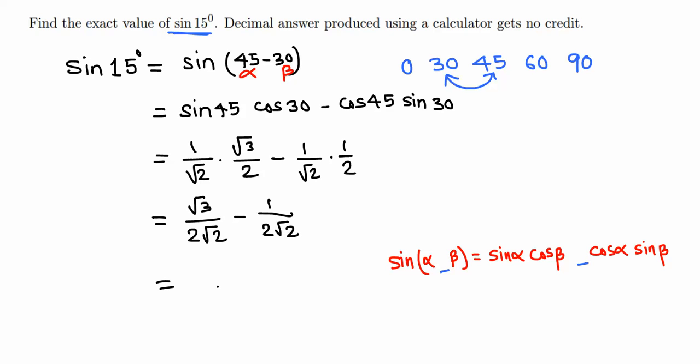We got the same denominator, so the common denominator is 2 root 2: root 3 minus 1. We can rationalize, but we don't need to. This is the final answer.